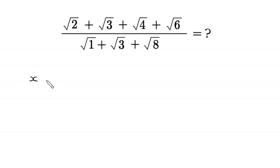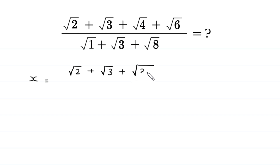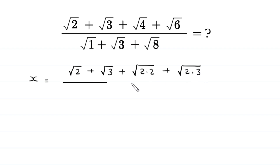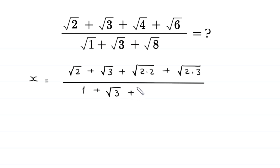So x is equal to square root of 2 plus square root of 3, and this square root of 4 can be written as square root of 2 times 2, and this square root of 6 can be written as square root of 2 times 3, divided by: this square root of 1 is 1, plus square root of 3, plus this square root of 8 can be written as square root of 4 times 2.